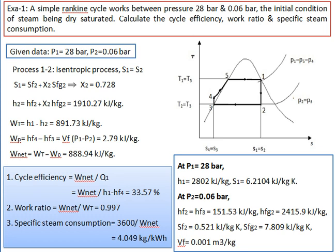Now we can study the Rankine cycle with the help of an example. In example number one, the given data is: a simple Rankine cycle works between pressures of 28 bar and 0.06 bar, with the initial condition of steam being dry saturated. Calculate the cycle efficiency, work ratio, and specific steam consumption.